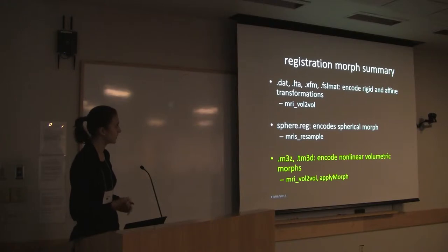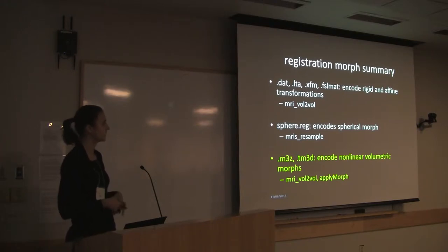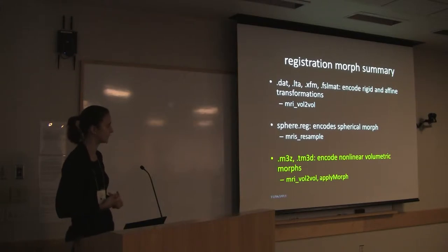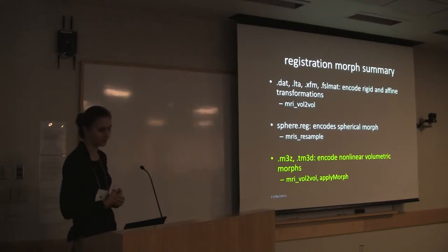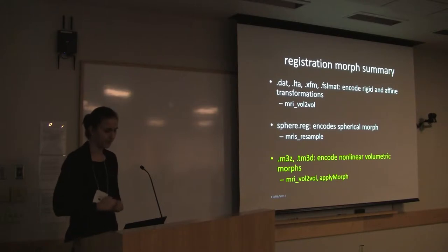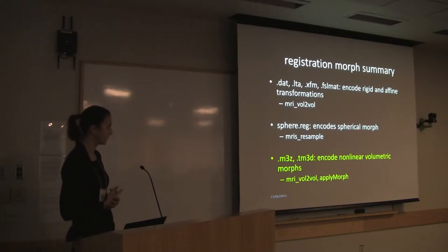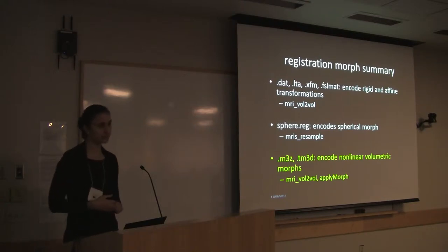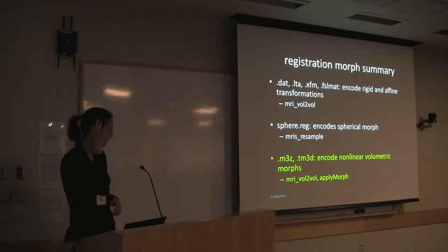When you have such a transformation file, as you have done in the exercises, you can use MRI vol-to-vol in order to apply that transform and resample the volume into the new space. When you run surface-based registration, you get a file called sphere.reg, and that encodes the spherical morph. In order to apply that transformation, you need to use the MRI surface resample command.